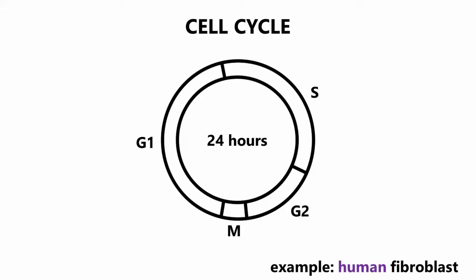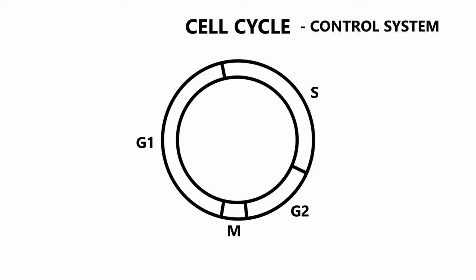As mentioned earlier, the correct execution of the cell cycle is vital for the cell and thus a complex regulation system is necessary. This cell cycle control system triggers the major events of the cell cycle and is based on a connected series of biochemical switches. These switches are generally binary, so either on or off, and are irreversible.